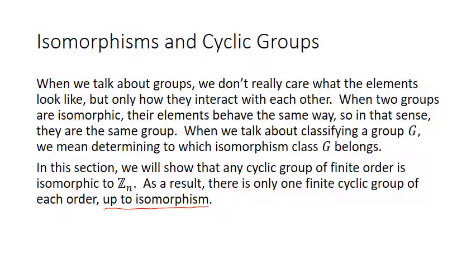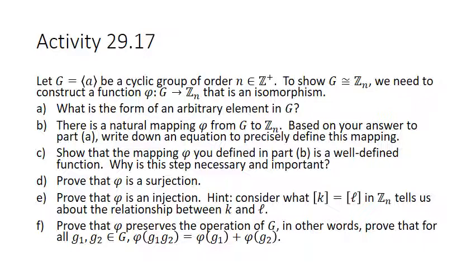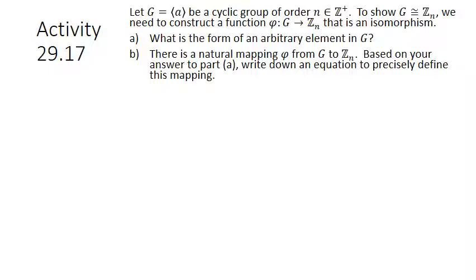We're going to do an activity to prove this. Let G, equal to the cyclic group generated by A, be a cyclic group of order n in Z-plus. To show that G is isomorphic to Zn, we need to construct a function phi from G to Zn that is an isomorphism. Part A asks: what is the form of an arbitrary element in G? Since G is generated by A, the arbitrary elements look like A to the K, where K is an integer. So G is all the powers of A for all integer powers.